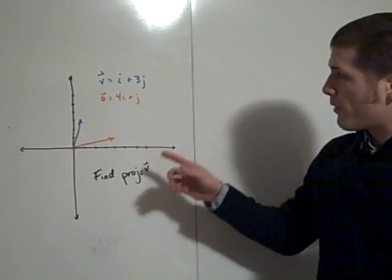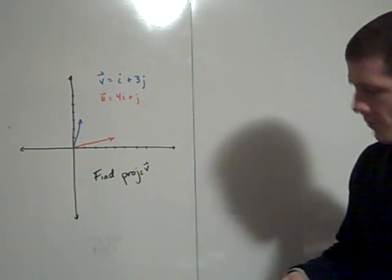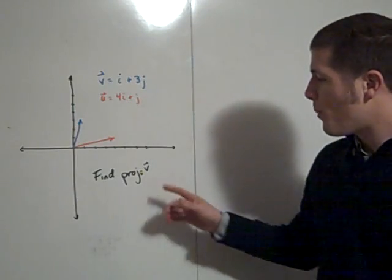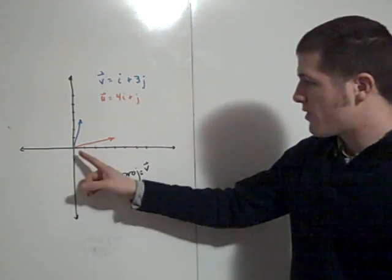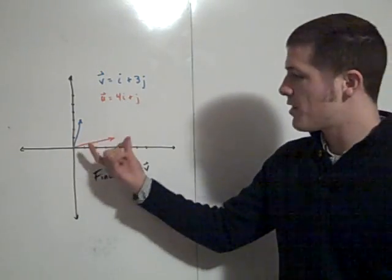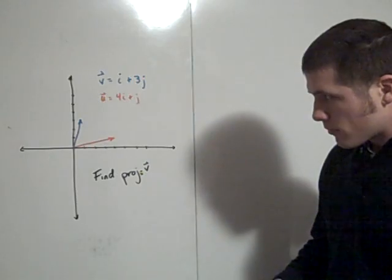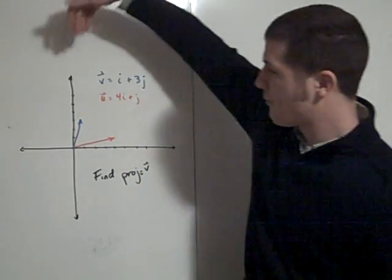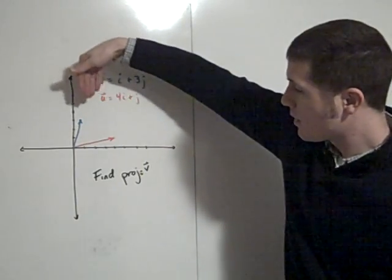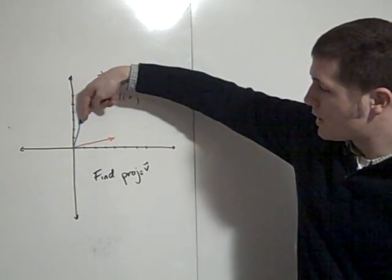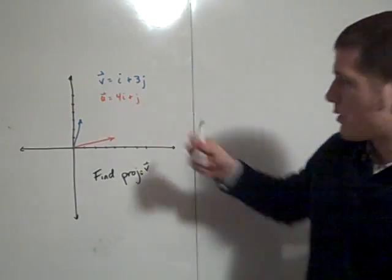If we want to find the projection of v onto u, we're really looking for how much of v is in the direction of u — how much of the magnitude of this blue vector is in the direction of the red vector. Think about shining a flashlight perpendicular down on this diagram, and how much of the blue vector falls onto the red vector.